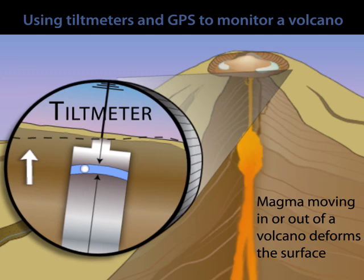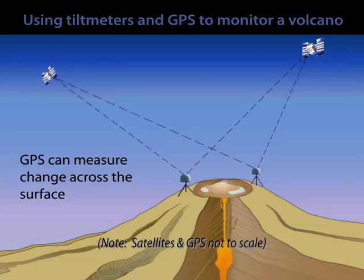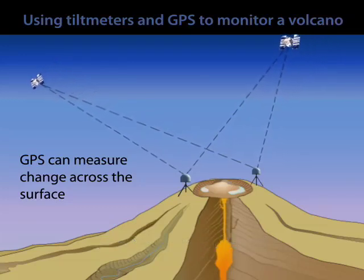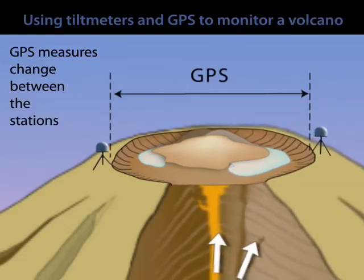Another instrument we use is the global positioning system, or GPS. So we put several of them out on the volcano, we record signals from satellites orbiting above the earth, and we look for movement of one of the stations with respect to the other.